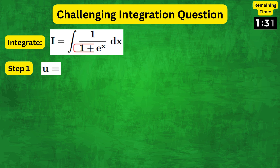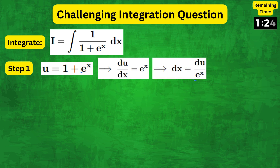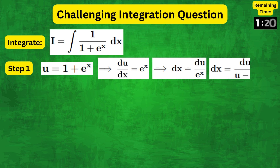As a first step, we will use the substitution u equals 1 plus e to the x, and therefore du by dx equals e to the x. Since e to the x equals u minus 1, we have dx equals du over u minus 1.